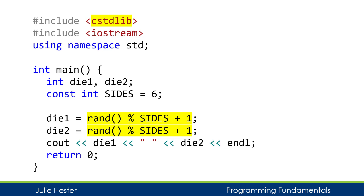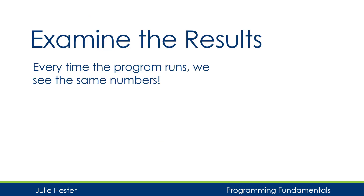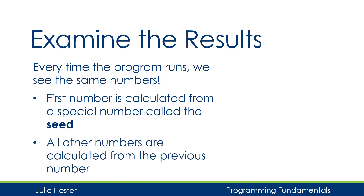Let's take a look at what's happening. Every time we run this program we are getting the same numbers. The reason for that is the first number, when we call the rand function, is calculated from a special number called the seed. And all the numbers that are calculated are calculated from the previous number.